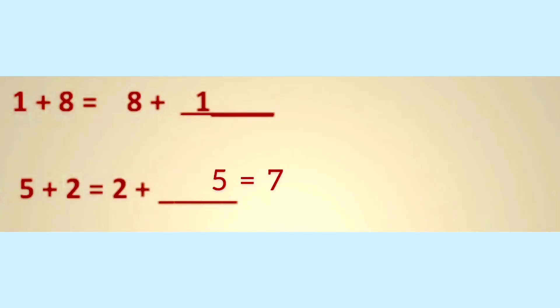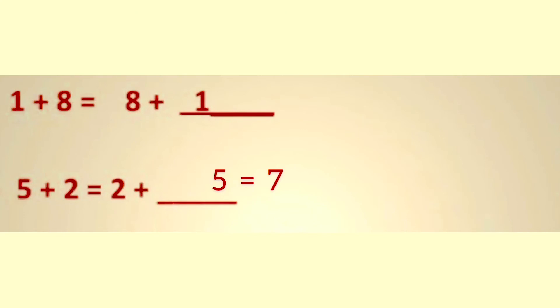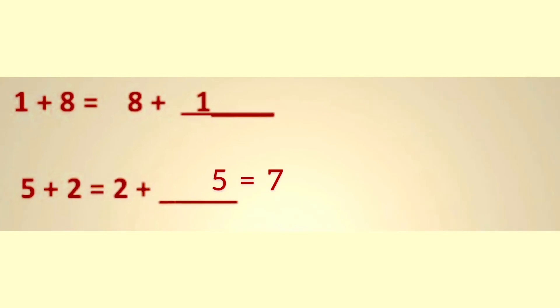Then we can check with more examples. The first question is one plus eight equals eight plus one. For both, the answer will be nine. That is, one plus eight equals nine, and eight plus one is also nine. Then the second question is five plus two. Five plus two equals two plus five. Five plus two is seven, and two plus five is also seven.